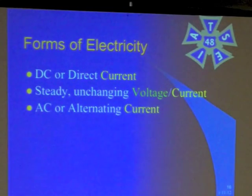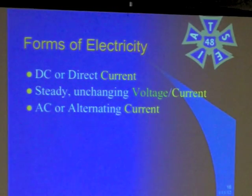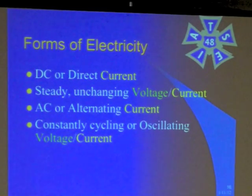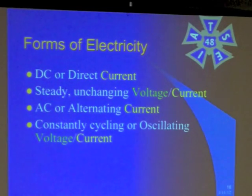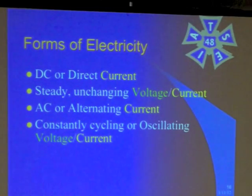Then we have AC, your alternating current. This is the kind that we use mostly. It's a constantly changing, constantly cycling or oscillating voltage or current. And we'll see exactly how that works in a second here.